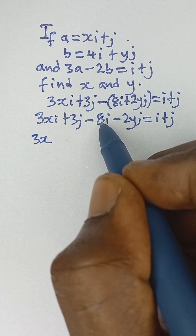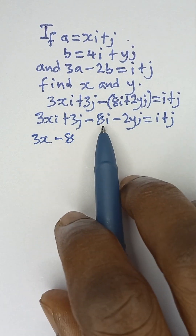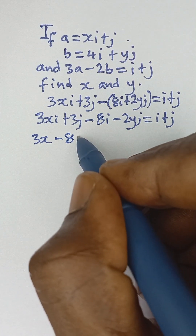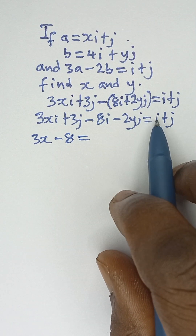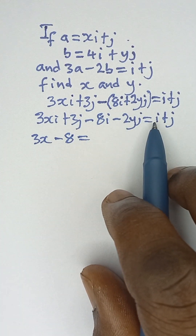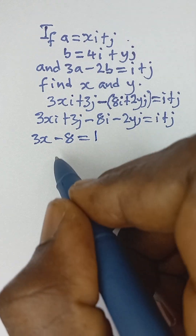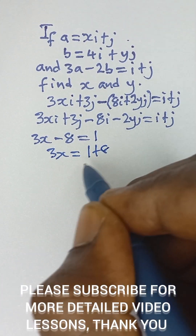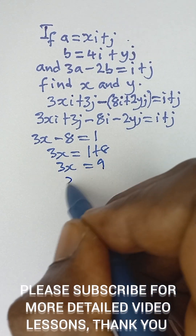Comparing the terms in i: 3x minus 8 on the left, and the term in i on the right hand side is 1. So 3x minus 8 equals 1, which gives us 3x equals 1 plus 8, so 3x equals 9, and therefore x equals 3.